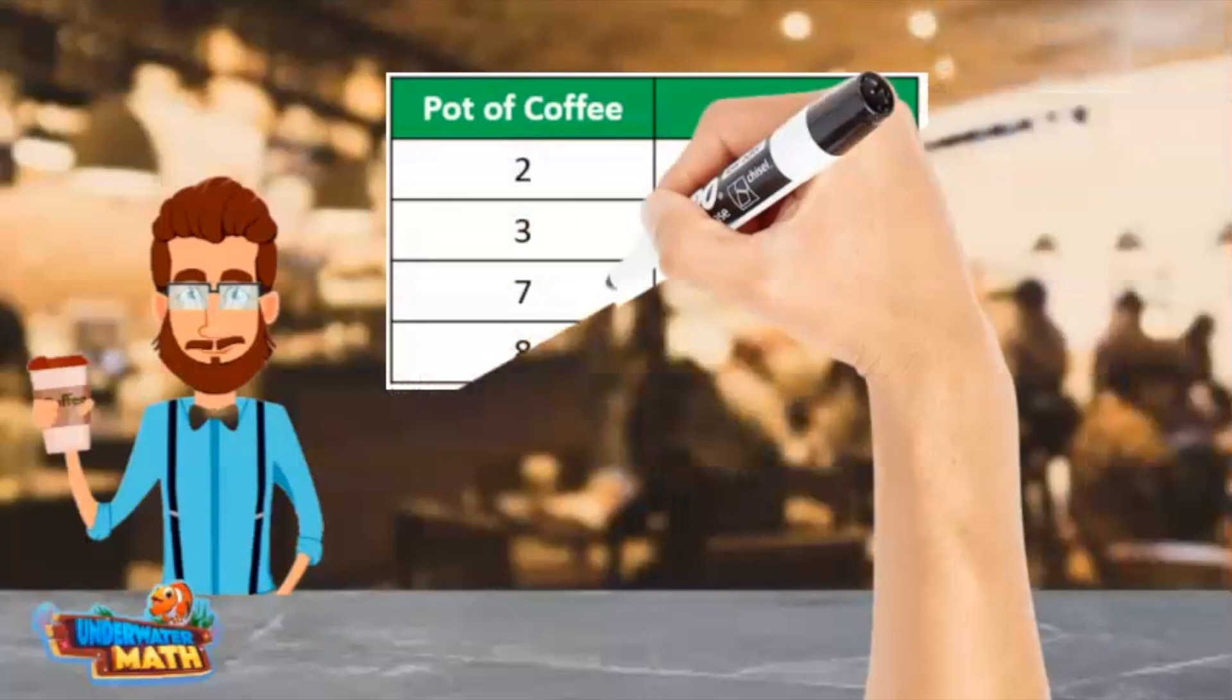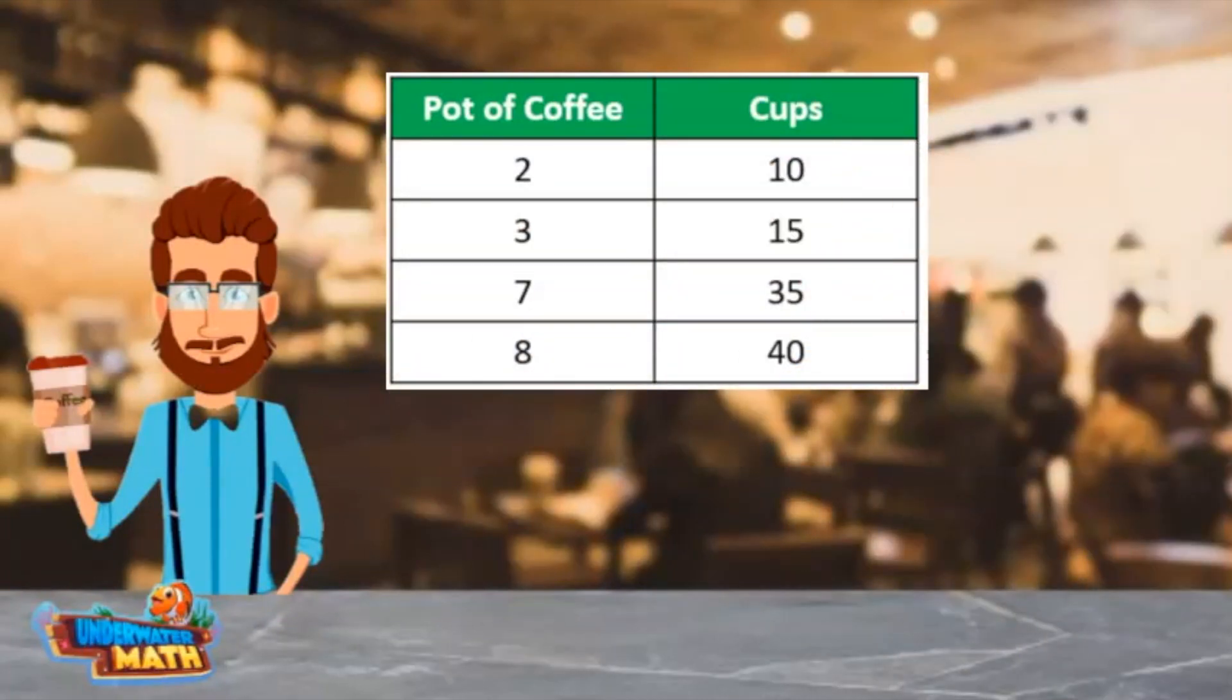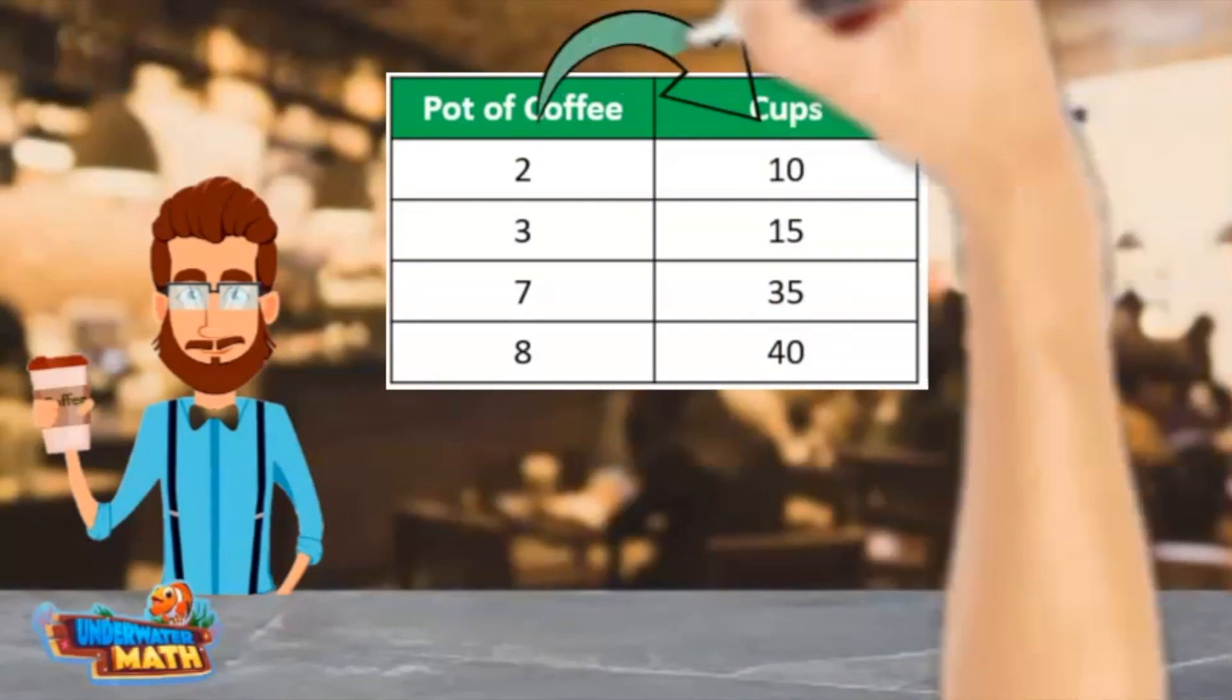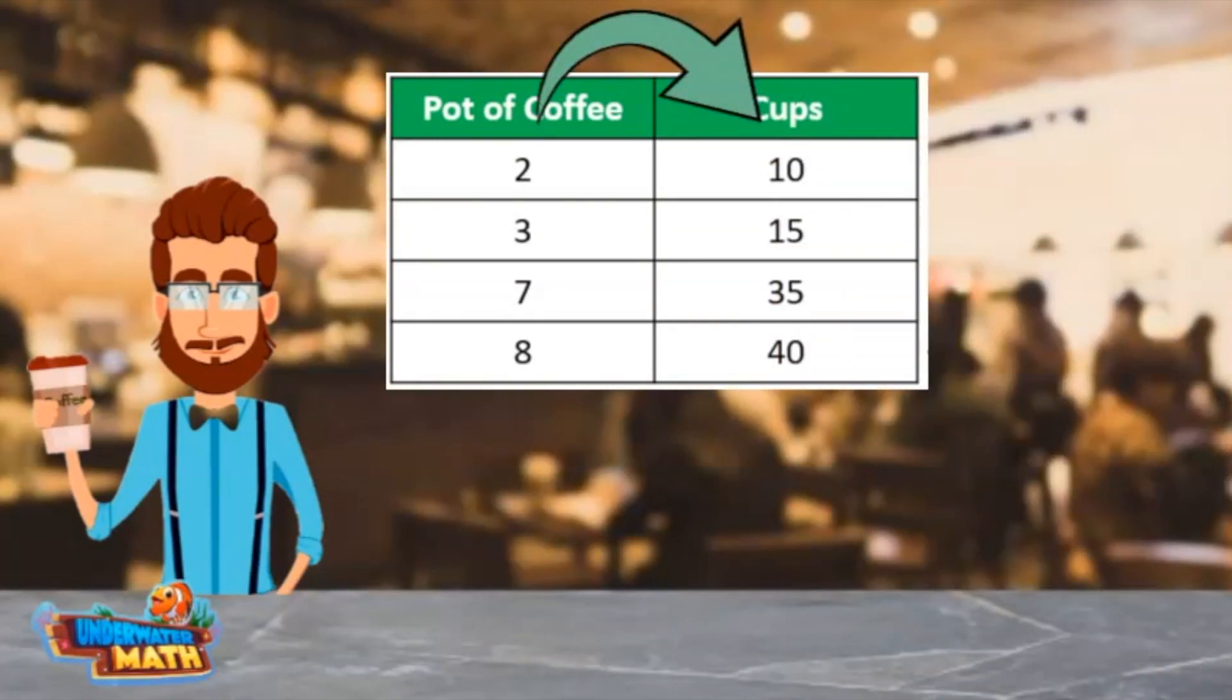Here is a table showing the number of cups of coffee per batch made. We are going to investigate to find the rule of the table. To do this, we read the table from left to right. I am looking to see the difference between the left column and the right column.